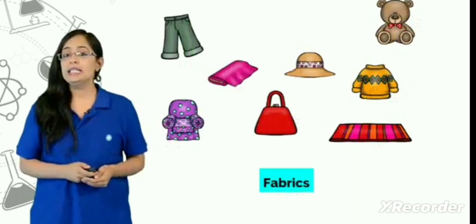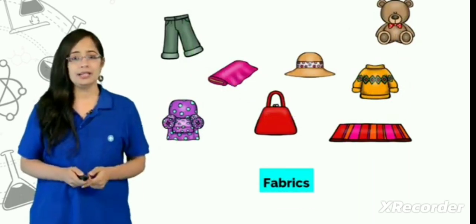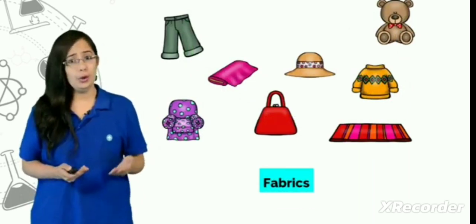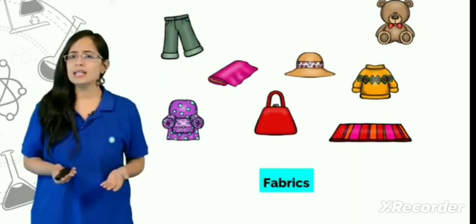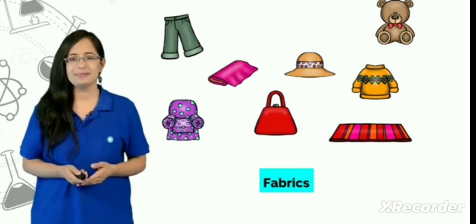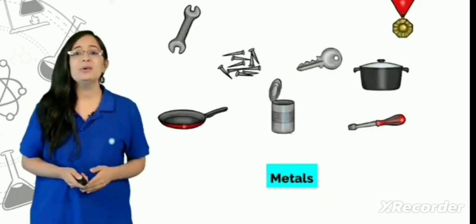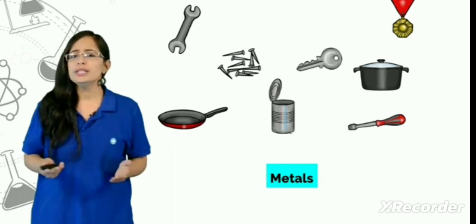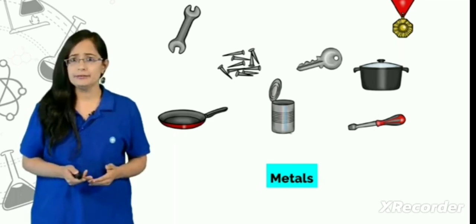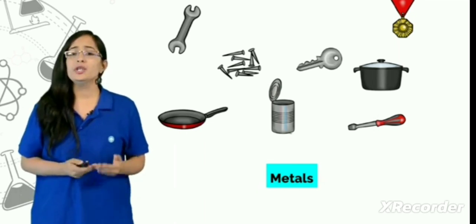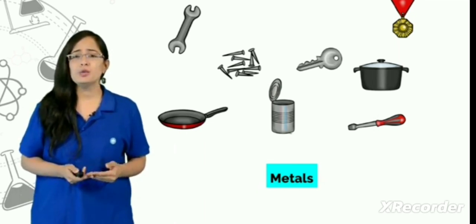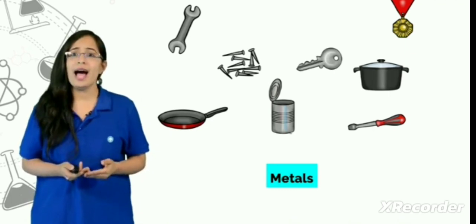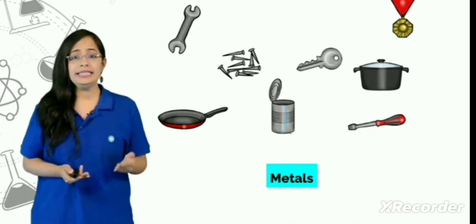Another important material is fabric, which is used to make various kinds of clothes, bags, etc. Another important material is metal, which we use in our daily life, and which is used to manufacture various kinds of equipment, glasswares, keys, and metals etc.